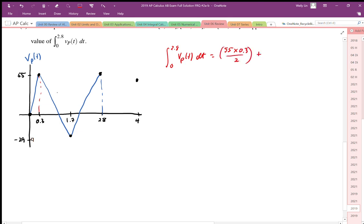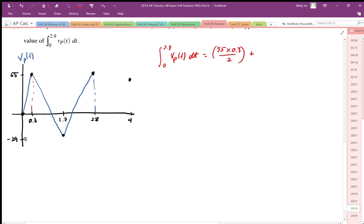Plus the next interval is going to be a trapezoid. So I'm going to use a trapezoid formula here. So 55 plus negative 29, we're going to divide that by 2 and multiply that by the interval width. And this next interval has a width of 1.4.